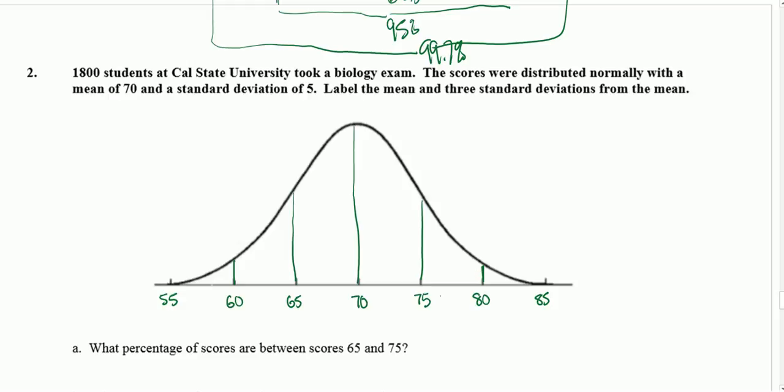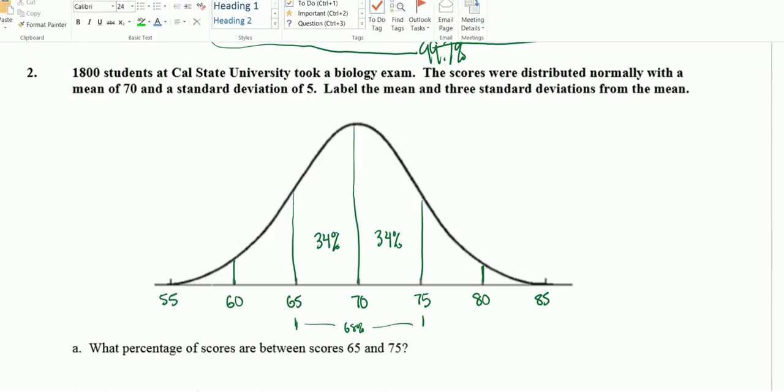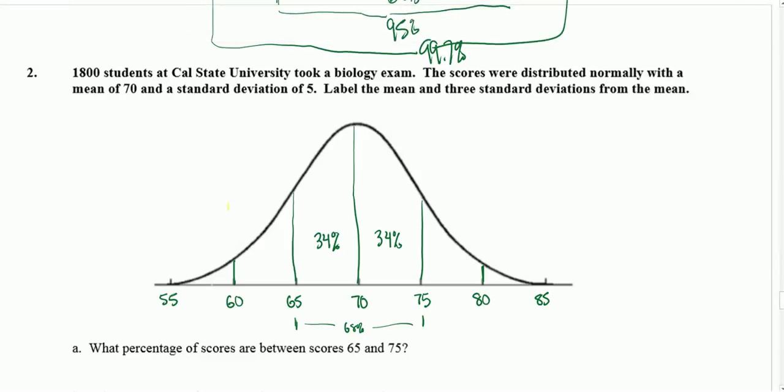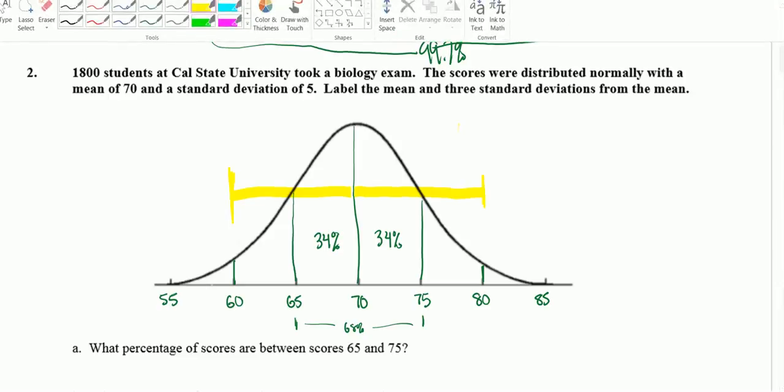What we're going to do is just split up this distribution into smaller parts. We know from 65 to 75 is 68% because that's one standard deviation each way. If we cut that 68 in half, we get 34 and 34%.